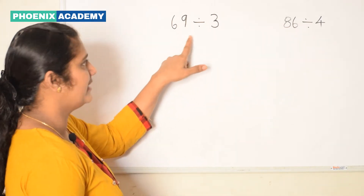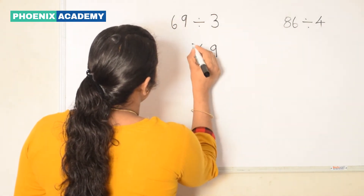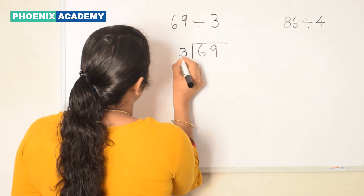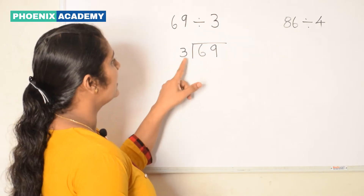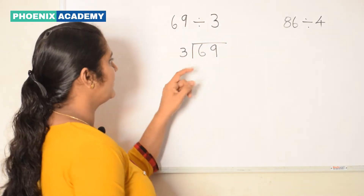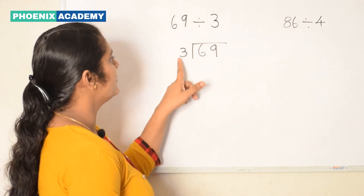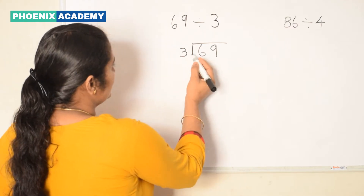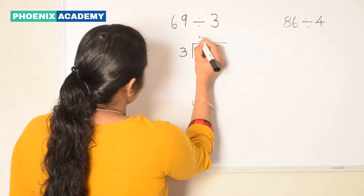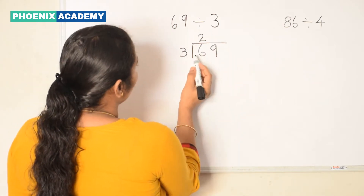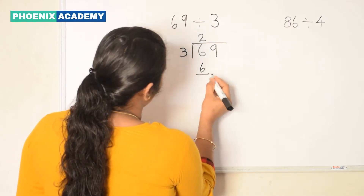Let's divide 69 by 3. Arrange the numbers like this. Check the digit in the 10th place whether it is greater than or equal to the divisor. Here 6 is greater than 3. So first divide 6 by 3. Say the table of 3 till you reach 6. Here 3 2s are 6. So we write 2 at the 10th place of the quotient and write 6 below the dividend. Then subtract.